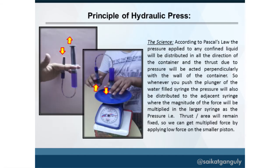For the hydraulic press experiment, two water-filled syringes are required. Whenever you push the small piston, you get a multiplied thrust from the larger piston — that is the principle of the hydraulic press, which is an application of Pascal's law.